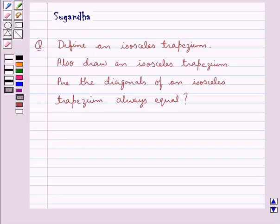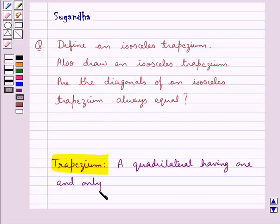Before we move on to the solution, first let's define what a trapezium is. A trapezium is a quadrilateral having one and only one pair of parallel sides.